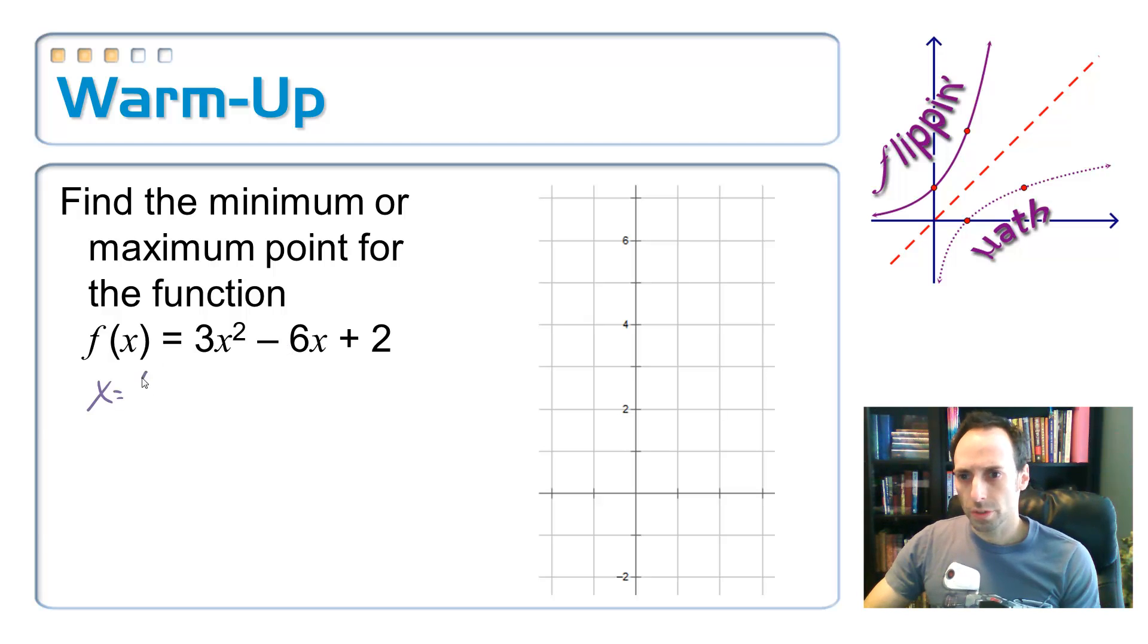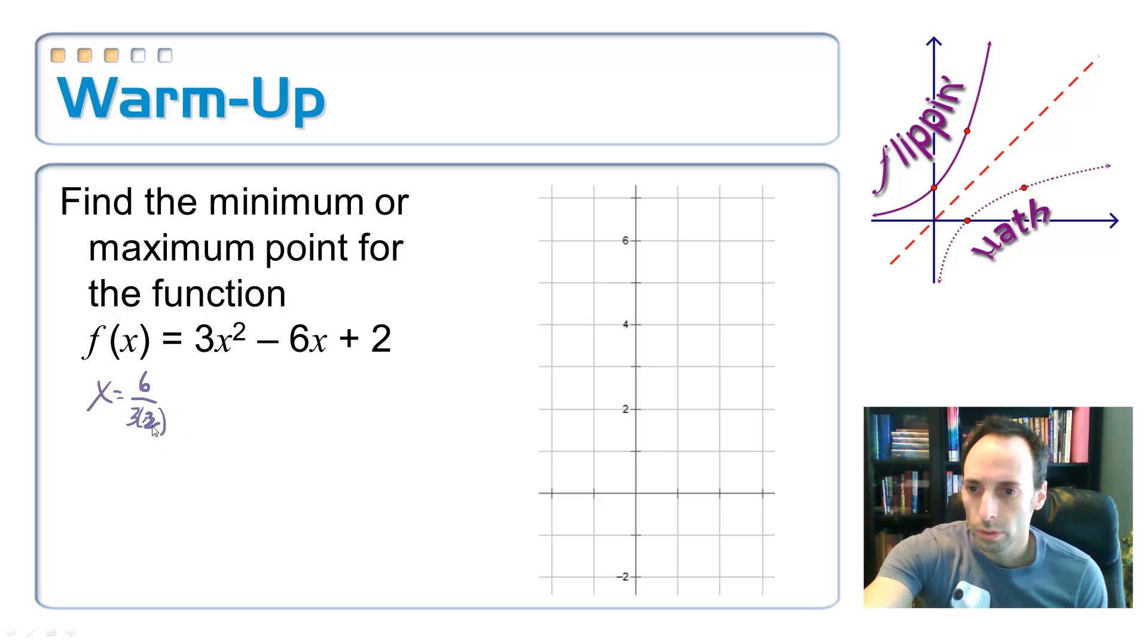I use the formula x is equal to negative b over 2a. My b is already negative, so it's going to be positive 6 over 2 times a, which is 2. That is the number 2. So, 6 over 6, which is 1.